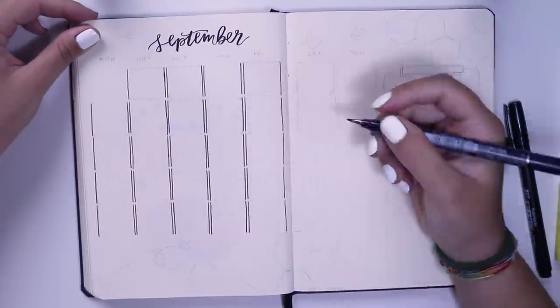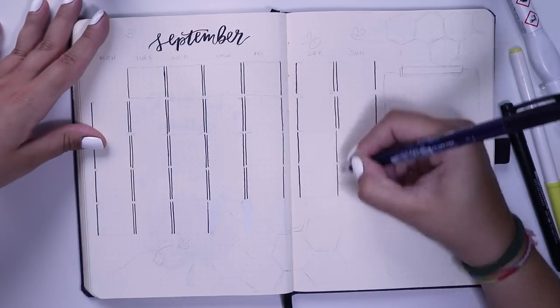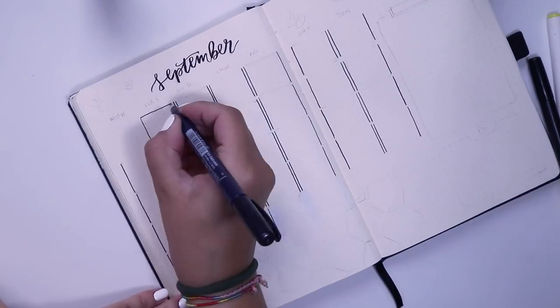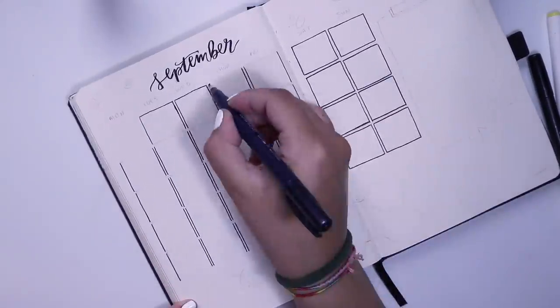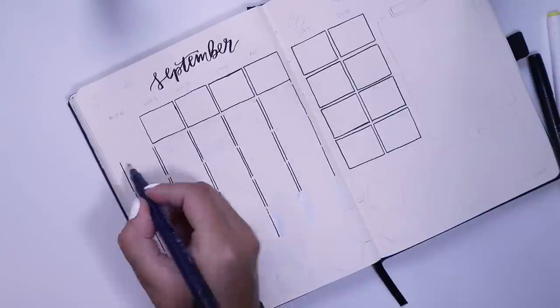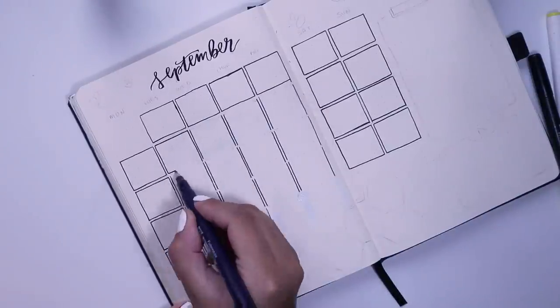I also don't really use a ruler much just because I really like the look of something being done quite messily or just done by hand. I really enjoy if some things aren't perfect, I just think it has a little bit more character.